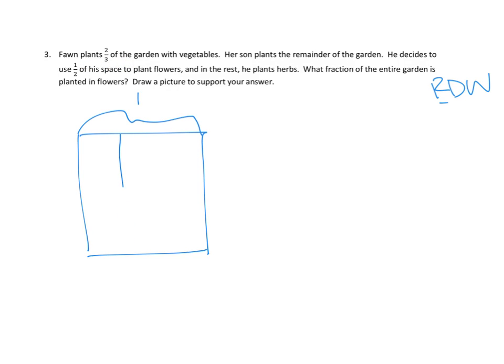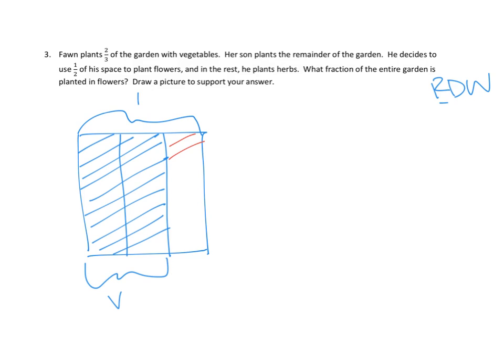Well, let's get a picture. So we can get the whole garden. I'm going to do a unit box like that - that's one for the whole thing. Fawn plants two thirds of the garden with vegetables. I'm going to draw my thirds, two thirds, and I'm going to shade in my two thirds. And you know what? I'm actually going to label that - she planted with vegetables - V, right? And her son plants the remainder of the garden. Oh, I see. So he's planting over here. He's planting over in this part. I'm going to switch colors. So the son is planting over here. Got it. And he decides to use one half of his space to plant flowers. Okay. Well, so he's going to divide this up in half. I'm going to draw my line all the way across, but recognize that I'm really only concerned with this part.